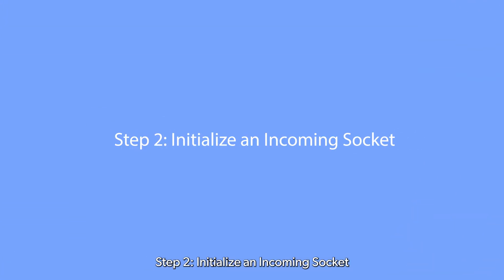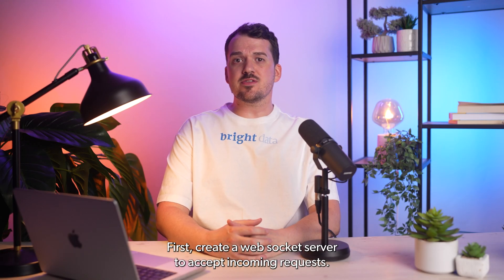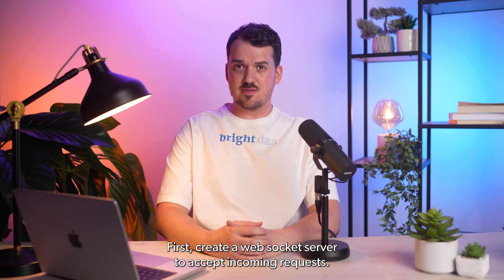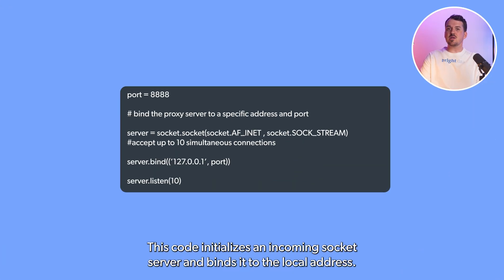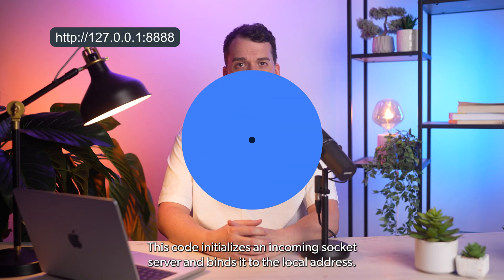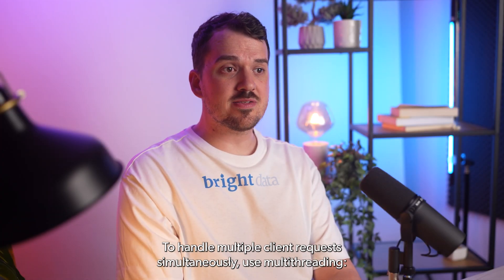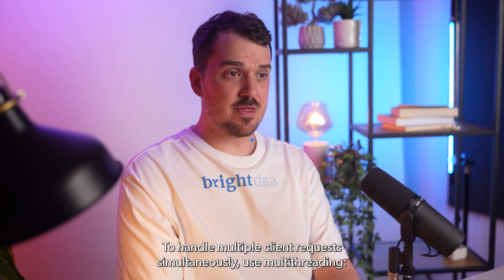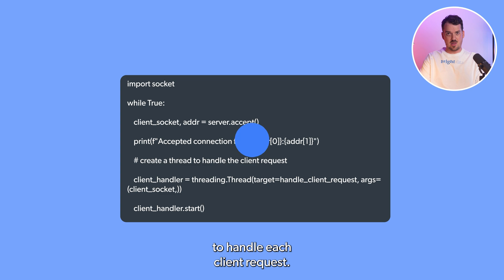Step 2: Initialize an incoming socket. First, create a WebSocket server to accept incoming requests. Use the following code to set up the server. This code initializes an incoming socket server and binds it to the local address. Step 3: Accept client requests. To handle multiple client requests simultaneously, use multi-threading. This code listens for incoming requests and creates a new thread to handle each client request.